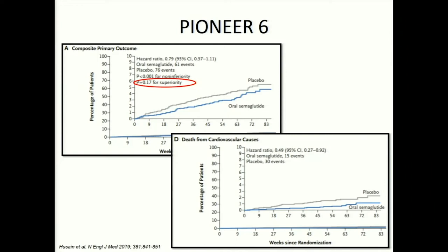For now I continue using the subcutaneous version of semaglutide because it's absorbed better than the oral. When I'm using a medication for cardiovascular risk reduction, I want to use the choice with the best evidence. Limitations of GLP-1s: the black box warning — in early rat studies, researchers noted increased C-cell hyperplasia, so we do not use these in anyone with a personal or family history of medullary thyroid carcinoma. We also avoid them in patients with gastroparesis.